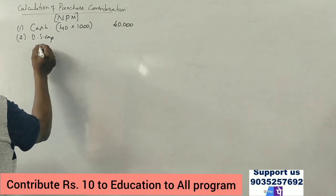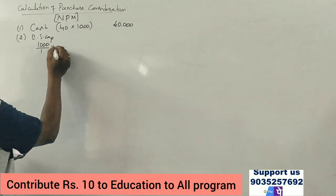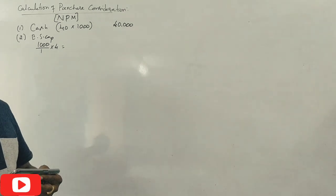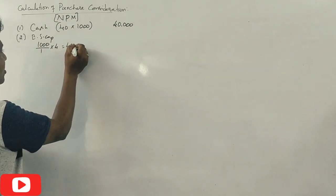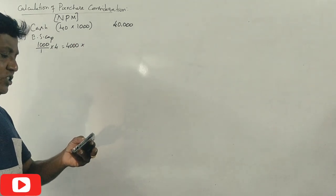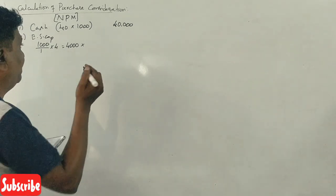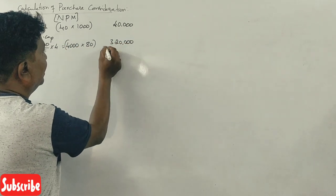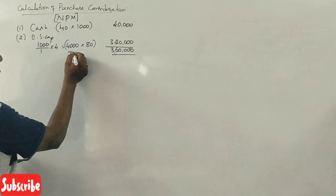The second component is equity share capital. For every one share in Asha company, Usha company gives 4 shares. So the total number of Usha shares issued is 4,000 shares. Each share has a face value of Rs.50 but a market value of Rs.80. So 4,000 shares at Rs.80 equals Rs.3,20,000. Therefore, the total purchase consideration is Rs.40,000 plus Rs.3,20,000, giving a total PC of Rs.3,60,000.